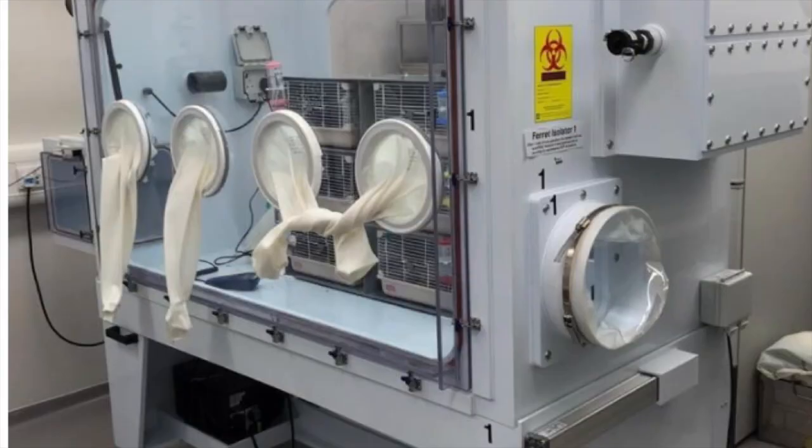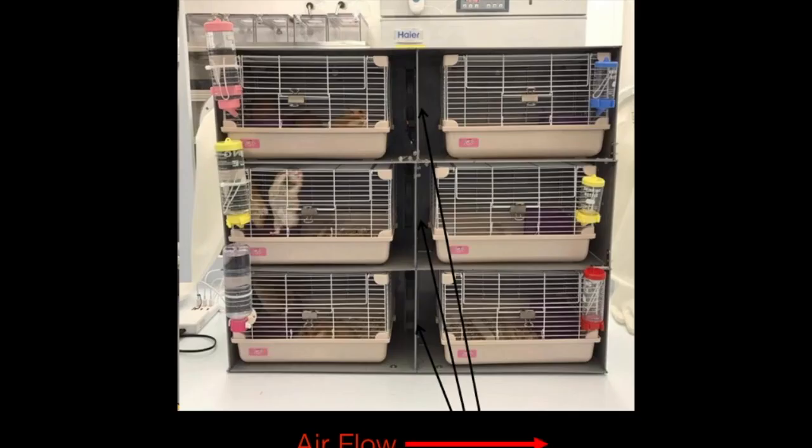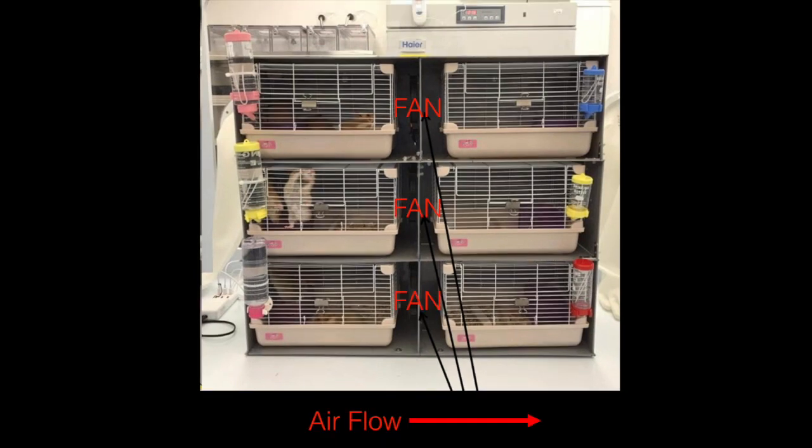Let me show you how it worked. So this was their biocontainment unit in Hong Kong where they keep the hamsters separate from people so the people don't get coronavirus. Here's the breakdown of the hamster cages. Six cages with fans blowing the air from the left side to the right side, blowing air through.